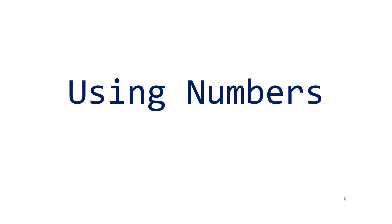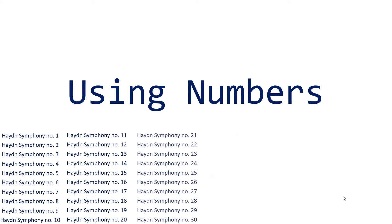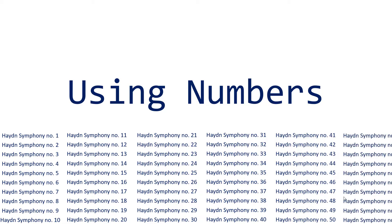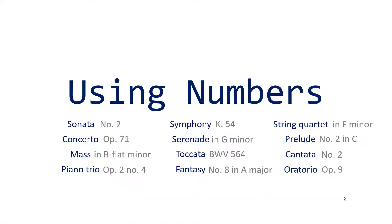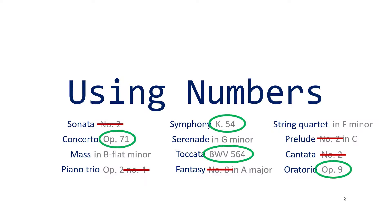Now there can be times when you do need to use numbers in your search, usually when a composer has a lot of pieces with the same generic title. For example, Haydn wrote over 100 symphonies, so not including a number there can make it pretty hard to find just the one symphony you need. But if you do include numbers, opus numbers are the least inconsistent. If you can, try to use opus numbers or thematic catalog numbers, which usually have capital letters in front, like BWV for Bach, K for Mozart, and so on.